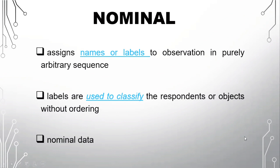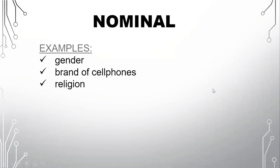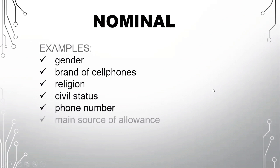We have here some examples of this level of measurement. For nominal, we have gender, brand of cell phones, religion, civil status, phone number, and main source of allowance. So like the qualitative variable, nominal scale is like that - classifications.